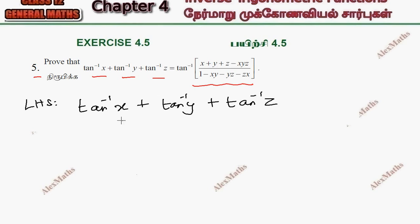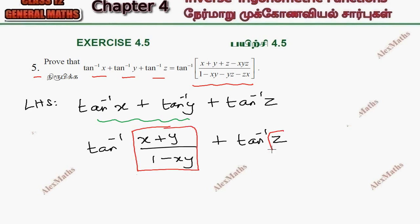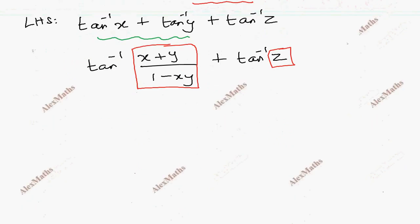In the first two terms, we will apply the formula: tan inverse of (X plus Y) divided by (1 minus XY), keeping the last term Z as it is. In the two-term formula, treat X and Y accordingly.